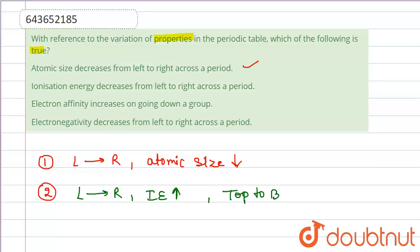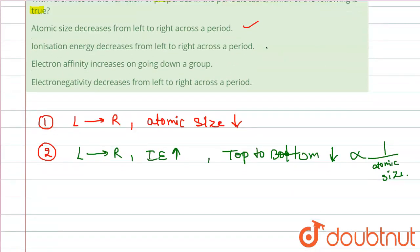Ionization energy decreases from top to bottom in a group. It is inversely proportional to atomic radius or atomic size. So the statement that ionization energy decreases from left to right across a period is not correct.